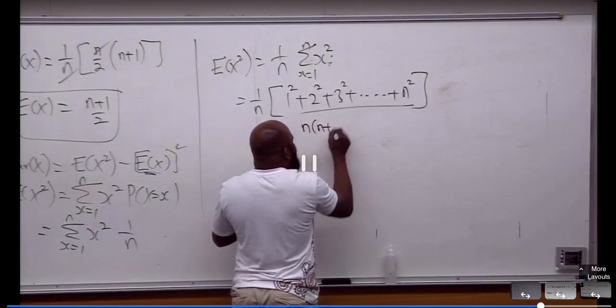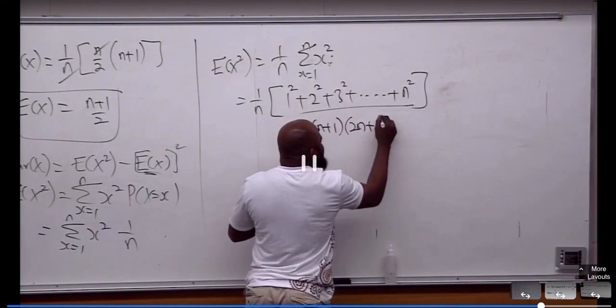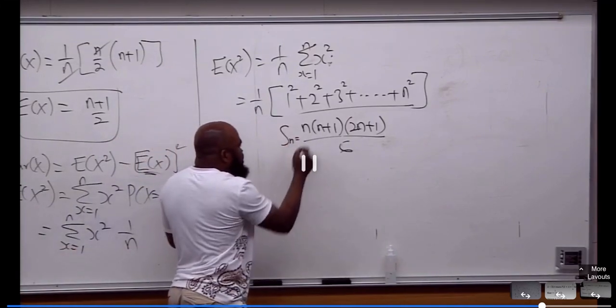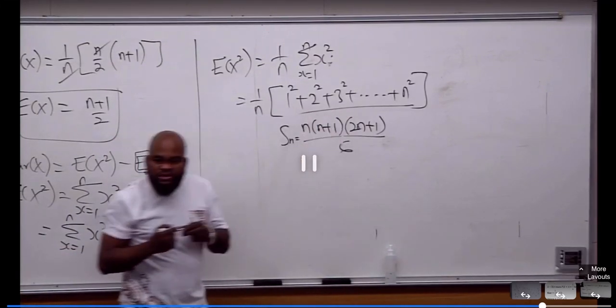Is it this guy? Can somebody remember this from what you've done before? That is the sum of square of a natural number. That's a formula. I'm going to plug in this guy here.